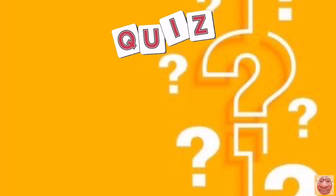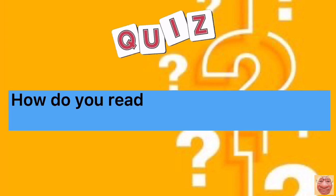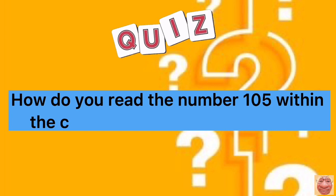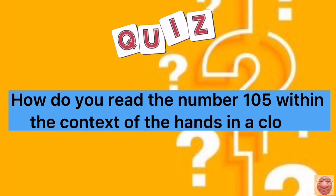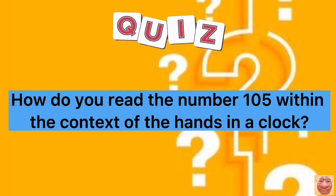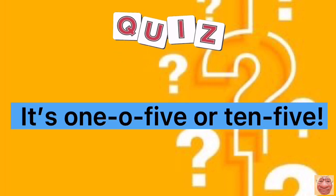Third, how do you read the number 10:5 within the context of the hands in a clock? Did you catch on the two possible answers? Correct, it's 10:5 or 10.5, as in 10:05 p.m. or 10.5 p.m.